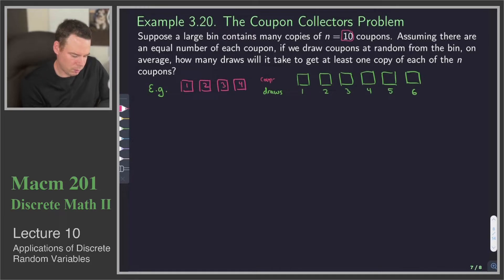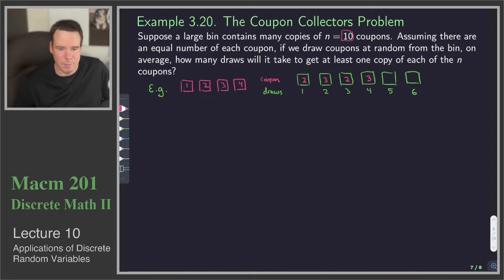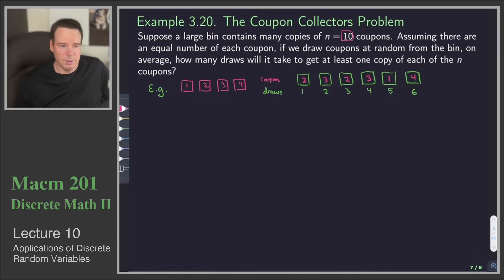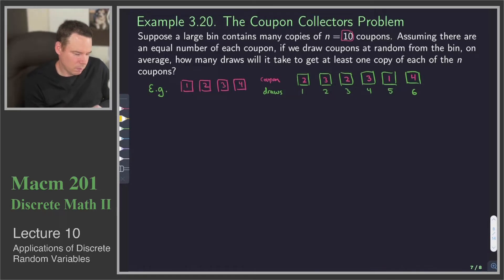So what coupon do we get? Maybe we got coupon number two on our first draw, then we got three, then we drew again and got a two, then a three again, then we finally got a new one — we got a one. So now I've got at least three of the four coupons. And then, on the sixth draw, I ended up getting the fourth coupon. Now I've got all four coupons. It took me six draws, but I managed to do it.